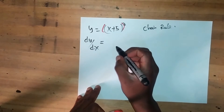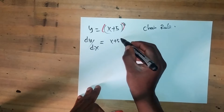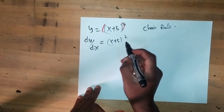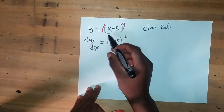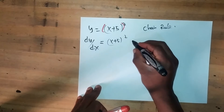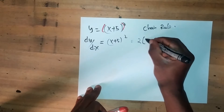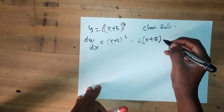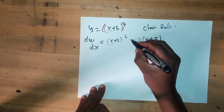The outer function is (x + 5) squared. Let's find the derivative of this outer function. The 2 will come to the front, so the outer function's derivative will become 2(x + 5). This is the derivative of the outer function.